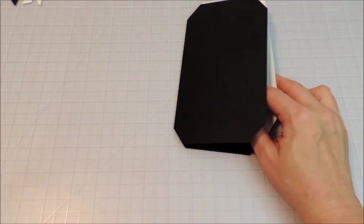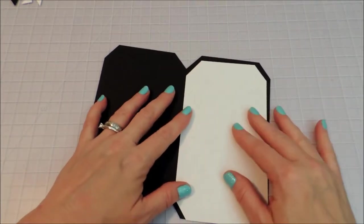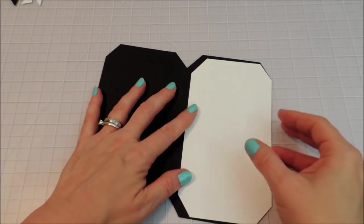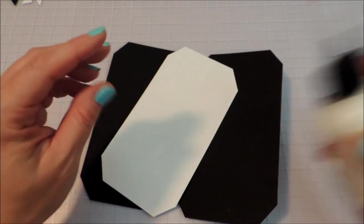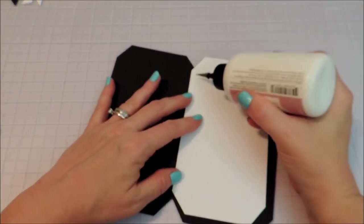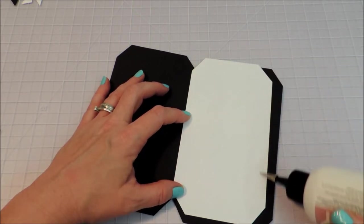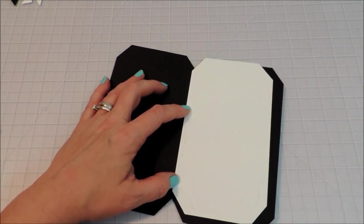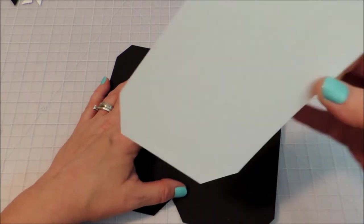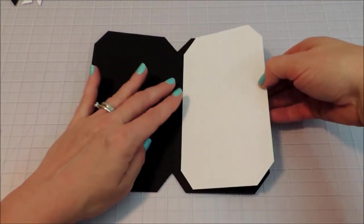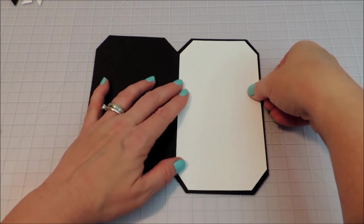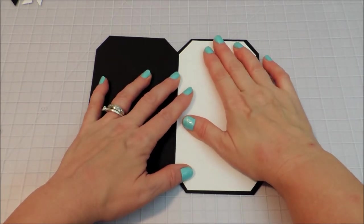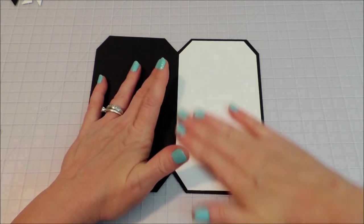And now I'm going to go ahead, set my die aside, and adhere that to the inside. And that's going to be the perfect border around that. And I'm just using art glitter glue. Just use whichever adhesive you prefer. And I think those corners being cut off helps give it a fun shape. I think that is really cute.